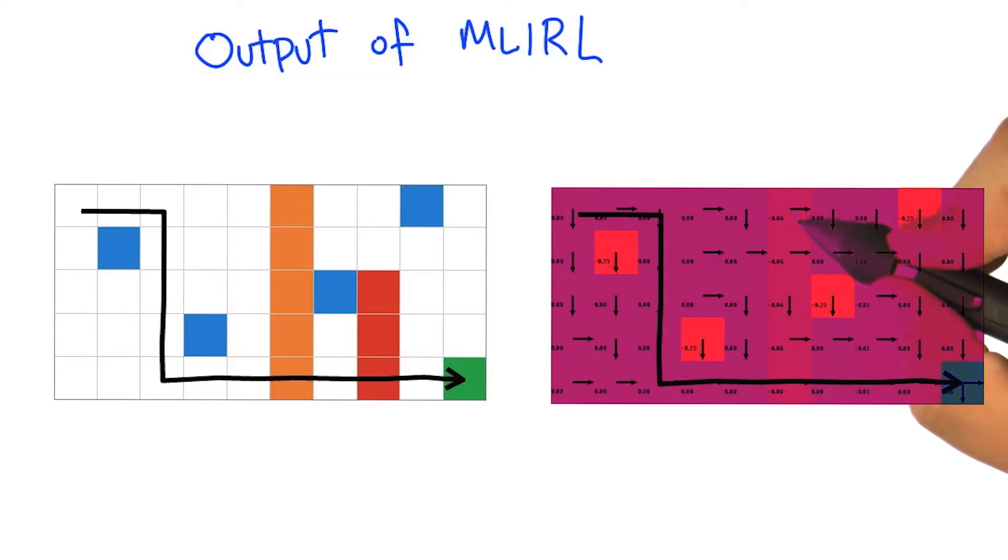One thing that's a little bit more interesting is that it actually concluded that this orange strip is somewhat aversive. It gave it a slightly stronger negative reward to try to get it to avoid it. And I guess that was because the demonstrated path didn't have the agent spending multiple steps there, and it could have. But it didn't. So maybe it was a bad place.